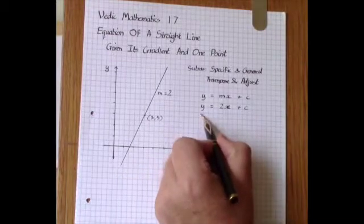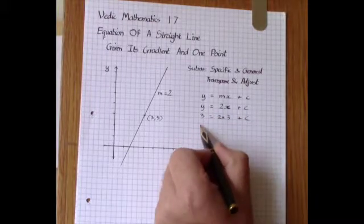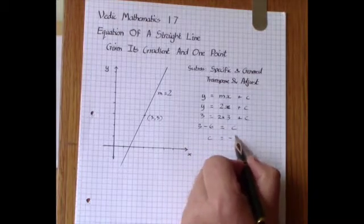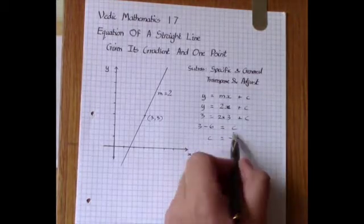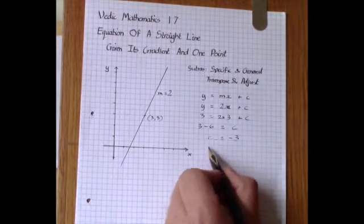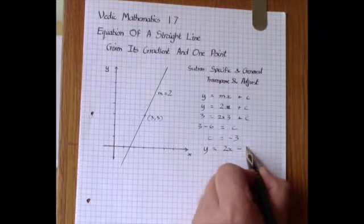Then we use the coordinates x and y, substitute them into the equation and solve for c. So we get 3 is 2 times 3 plus c and hence c equals minus 3. We then substitute this minus 3 back into the equation giving y equals 2x minus 3.